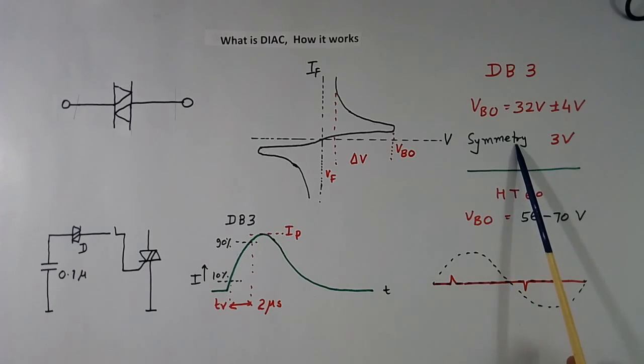But there is a difference, there is a symmetry problem. Means, this voltage and this voltage, VBO plus side and minus side may not be equal, there may be error of 3V. One side it may trigger at 32, other side it may trigger at 29. So while designing the circuit, we should remember this.